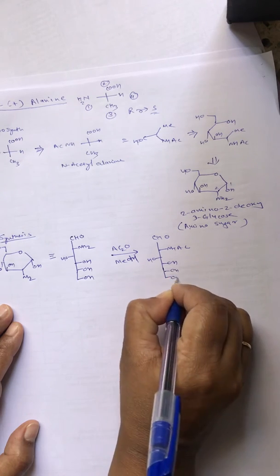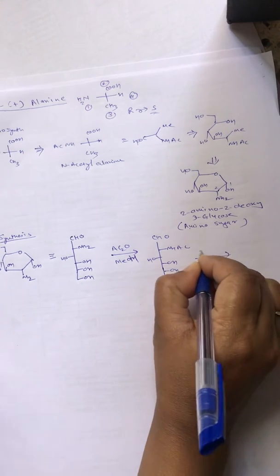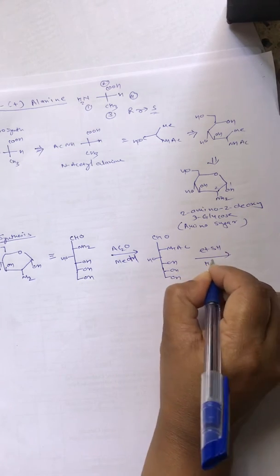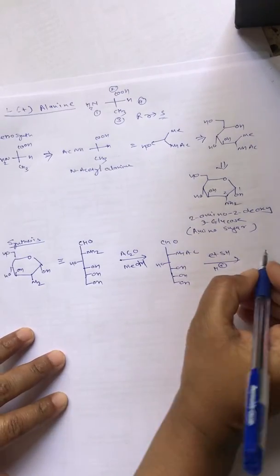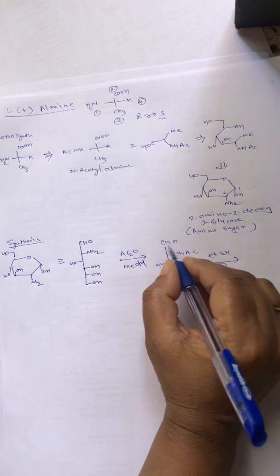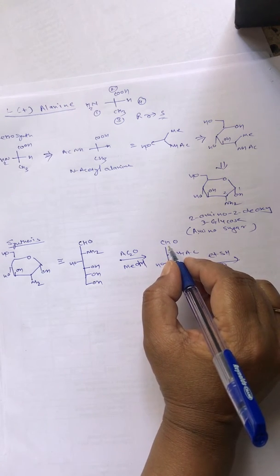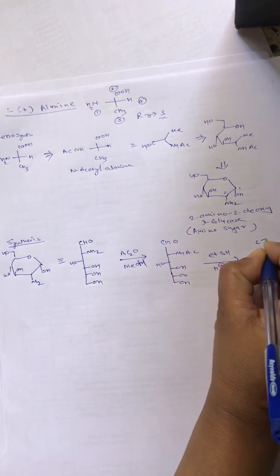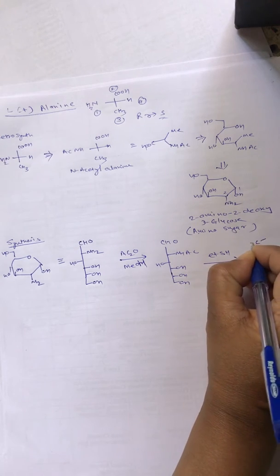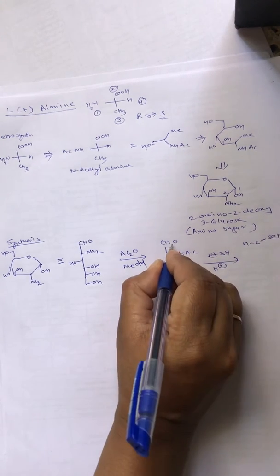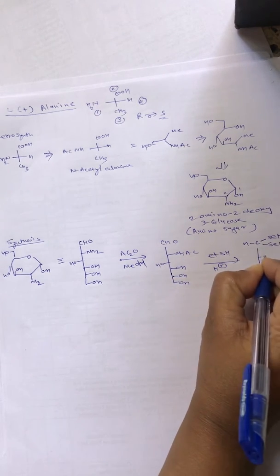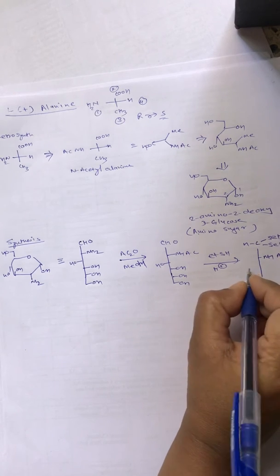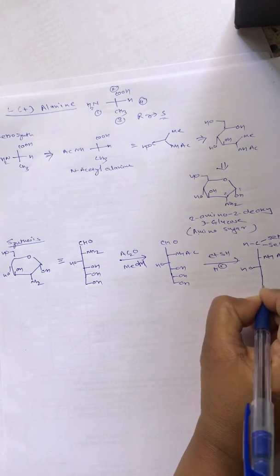This is treated with ethanethiol and H+. We have learned that the thioacetal can protect the open-chain structure. So we will get the protected open-chain structure, which can be written as S-ET. The carbonyl group will react with this, and in this way we protect our sugar in an open-chain formula.